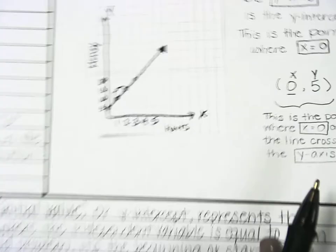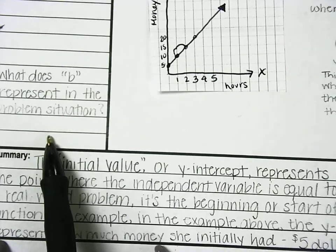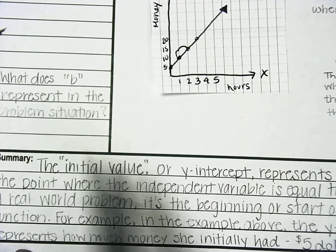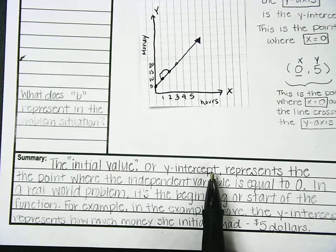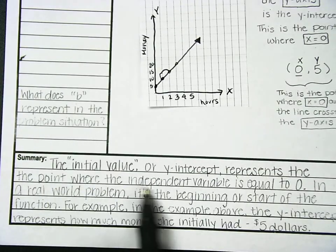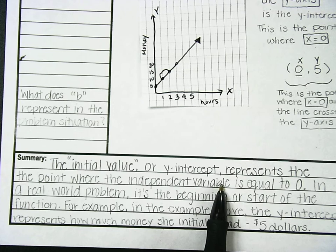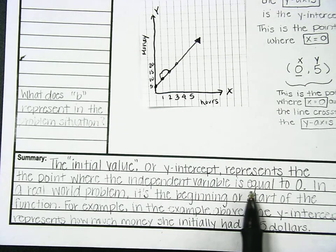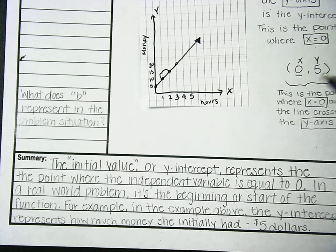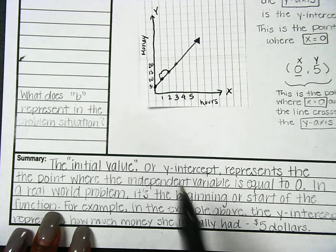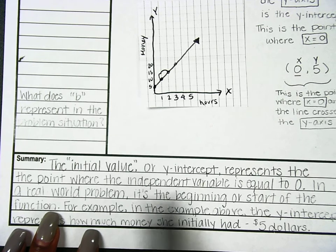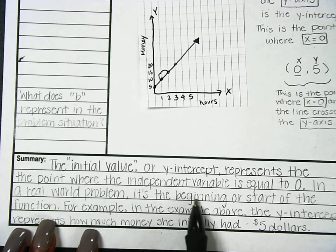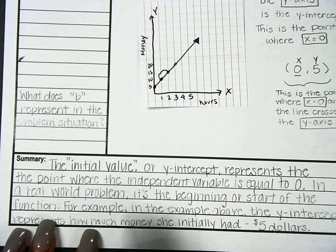So what does b represent in the problem situation? Well, the initial value, or the y-intercept, represents the point where the independent variable, which is x, is equal to zero. We've already said that the y-intercept is when x is zero, so we're just rewriting that as independent variable equals zero. In a real-world problem, it's the beginning or the start of the function.